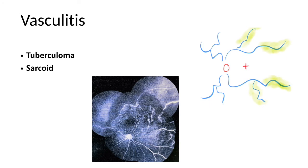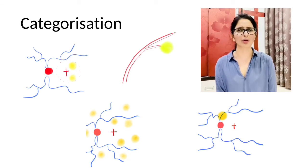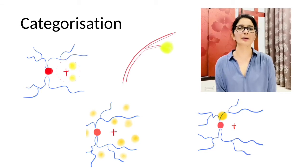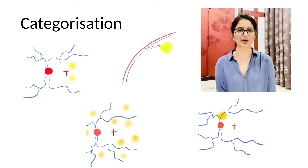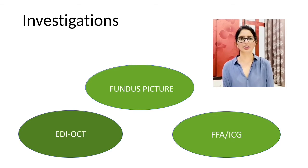Just do an FFA and you'll find a lot of capillary non-perfusion areas in tuberculosis. Sometimes these choroidal granulomas can be categorized as macular, perivascular, optic nerve head granuloma, or diffuse granulomas. Pertinent investigations from an ophthalmologist's point of view include fundus photography, enhanced depth imaging OCT, fundus fluorescein angiography, and indocyanine green angiography.